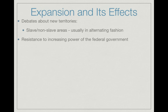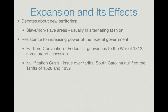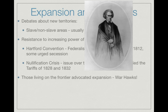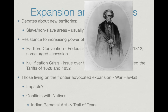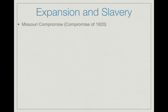Every time the U.S. expanded, the number one issue was whether the new area would be slave or free — states were typically admitted in alternating fashion. There was resistance to increasing federal power: the Hartford Convention involved Federalists upset with the War of 1812, with some urging secession. The Nullification Crisis was similar for the South — South Carolina nullified the Tariffs of 1828 and 1832, written by John C. Calhoun. Those on the frontier advocated expansion, like War Hawks during the War of 1812. The impacts included conflicts with Native Americans, leading to the Indian Removal Act and the Trail of Tears.